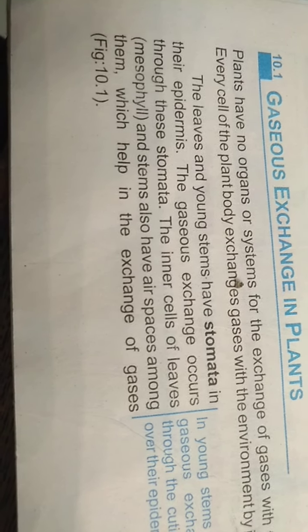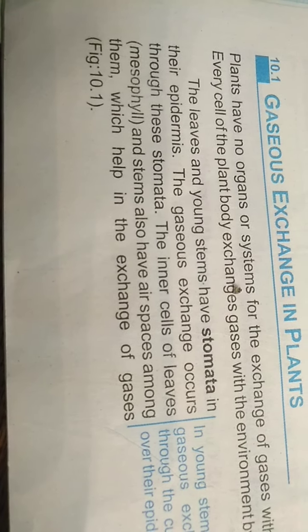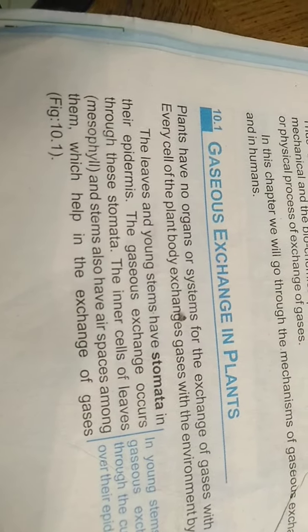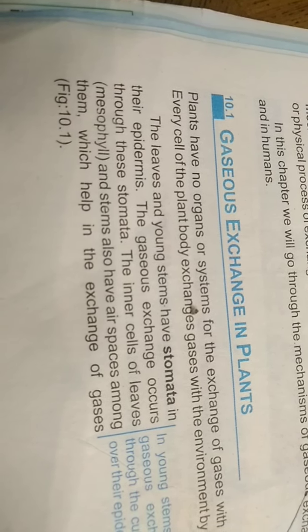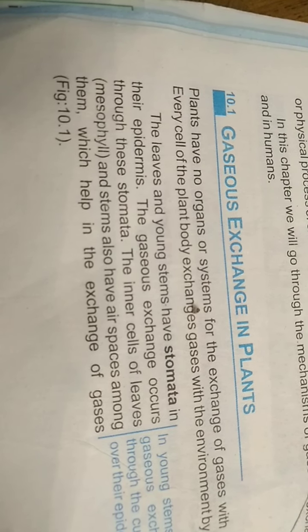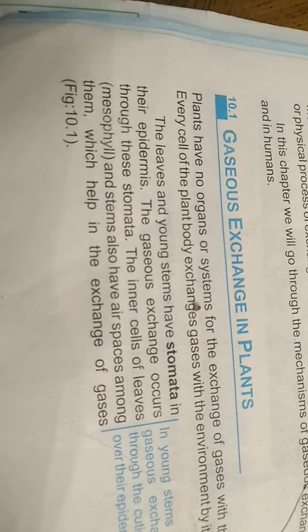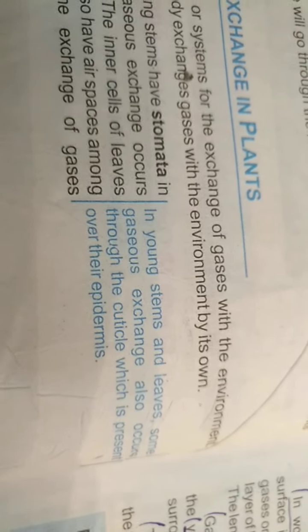The leaves and young stems have stomata in their epidermis. This leaf — the front side and the back side — if we observe the back side closely, we see small pores called stomata, which are responsible for the exchange of gases. The gaseous exchange occurs through these stomata. The inner cells of leaves and stems also have air spaces among them which help in the exchange of gases.